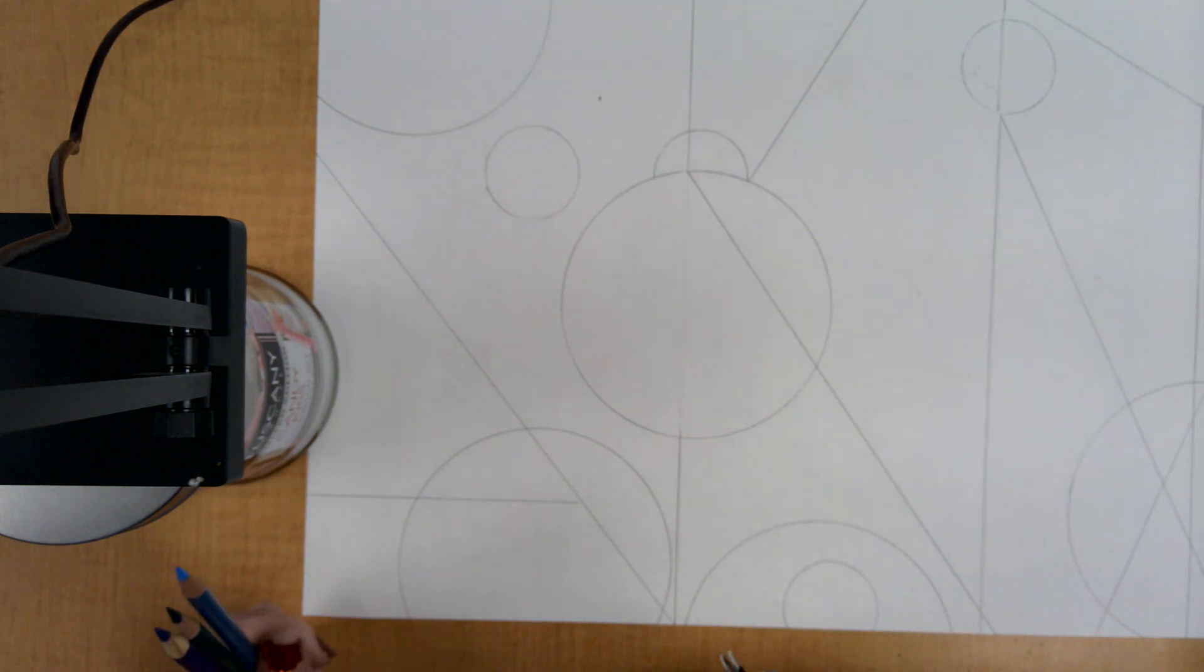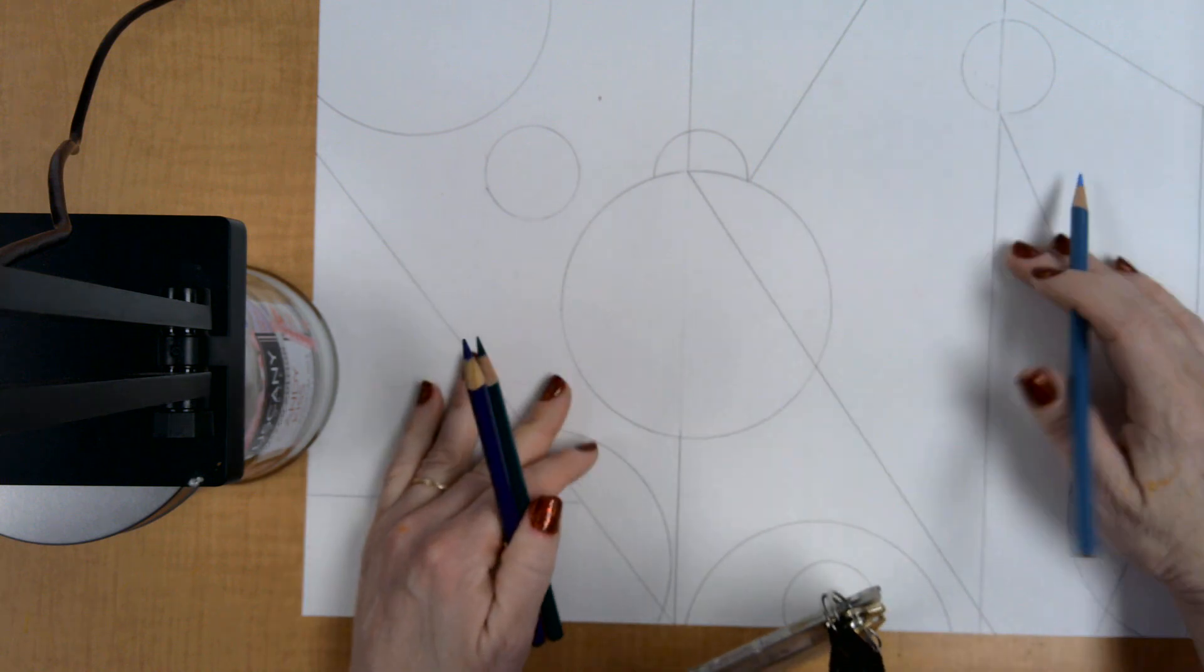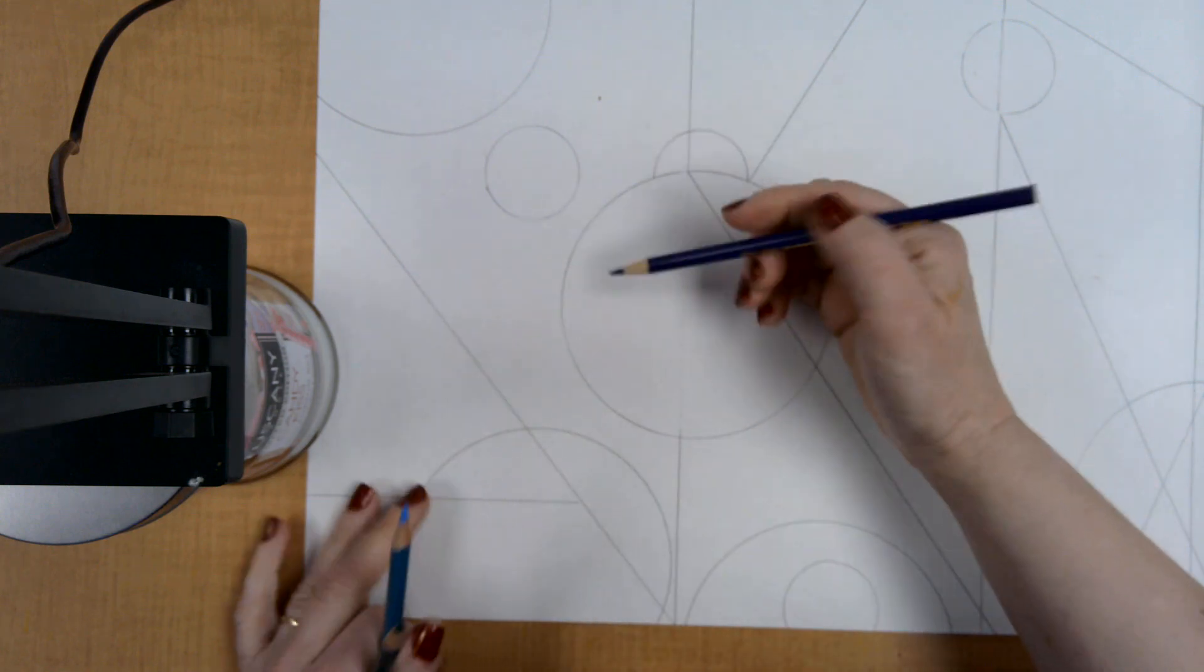Okay, the next part of this is shading. So you're going to pick colors that are similar to each other. And I'm going to make this shape right here. I'm going to start with my darkest on the outside.